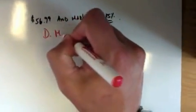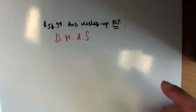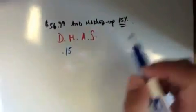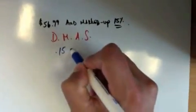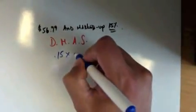Now we have 15%, that's my decimal: .15. Multiply - now 56, I don't know, I don't want to do 56.99, so I'm going to do 57.